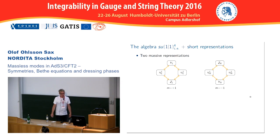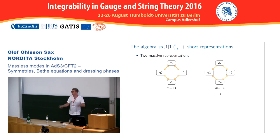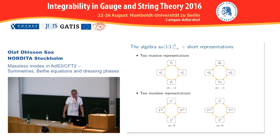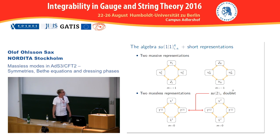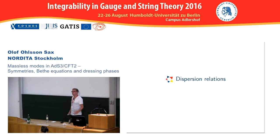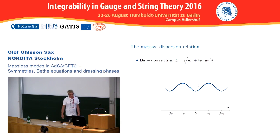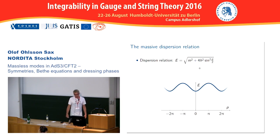The world-sheet excitations in light-cone gauge consist of four short representations of this algebra. There are two massive representations — a left and a right mover — corresponding to the SU(1,1|2) left or right algebra. And there are two massless four-dimensional representations. The two massless representations form a doublet under SU(2)_circle, an algebra that completely commutes with SU(1,1|2) and with the centrally extended SU(1|1)^4.